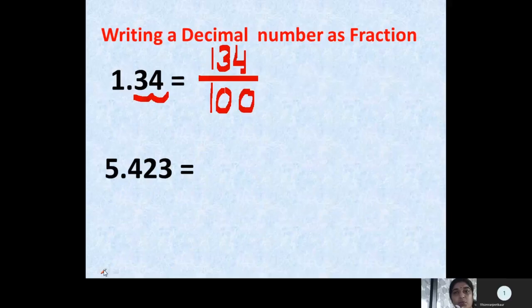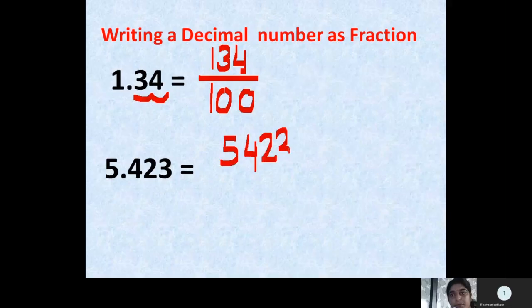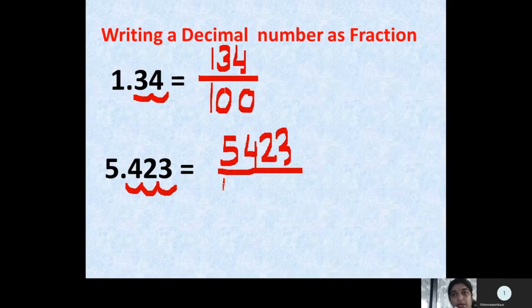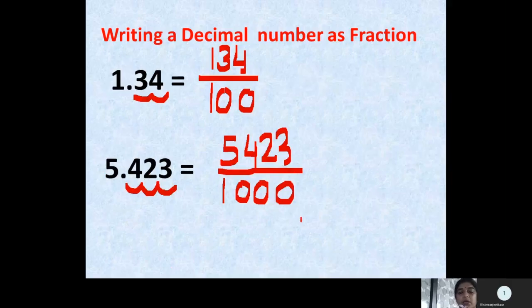Let us write the fraction corresponding to 5.423. First we write all the digits — they all go in the numerator, giving 5423. After the decimal we have 3 digits: 1, 2, 3. Since there are 3 digits after the decimal, we write 1 followed by 3 zeros, that is 1000. So the fraction corresponding to 5.423 is 5423 by 1000.